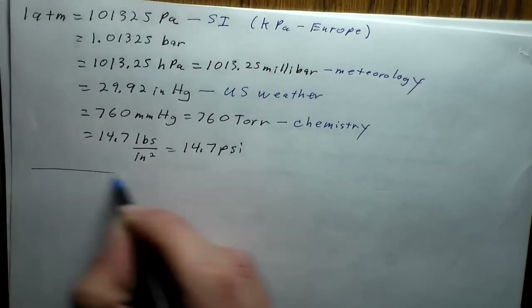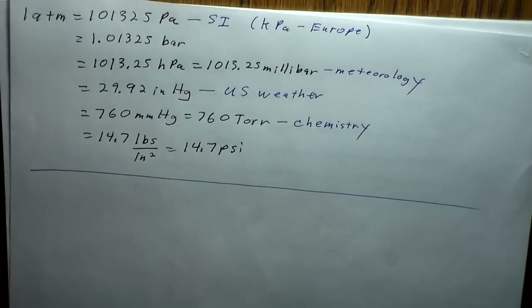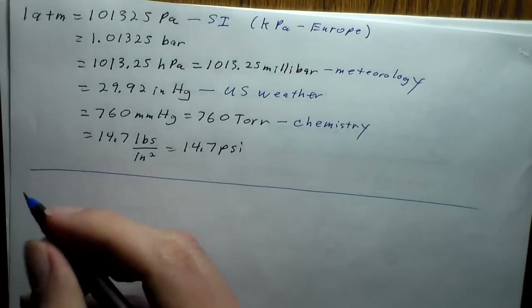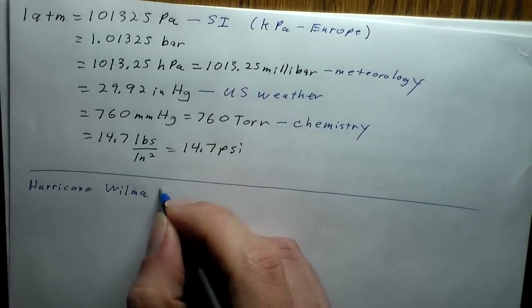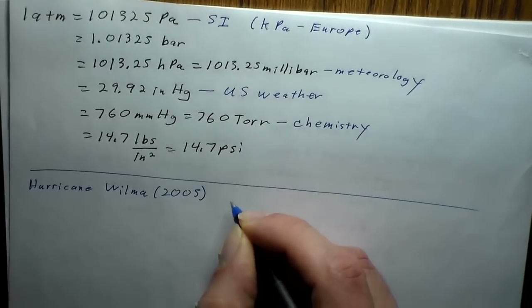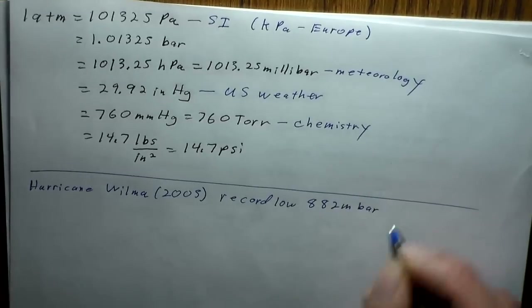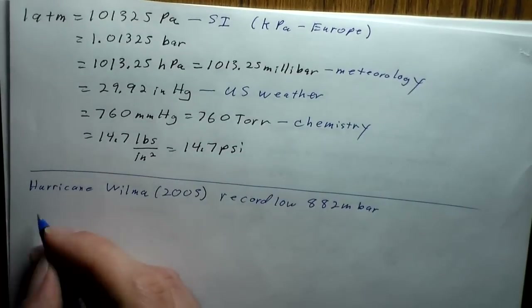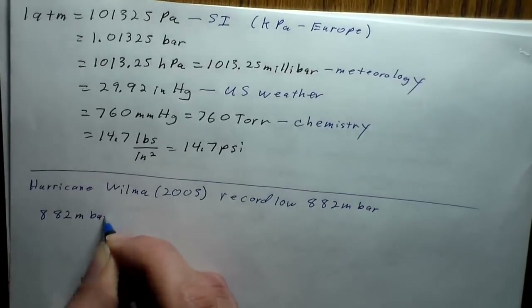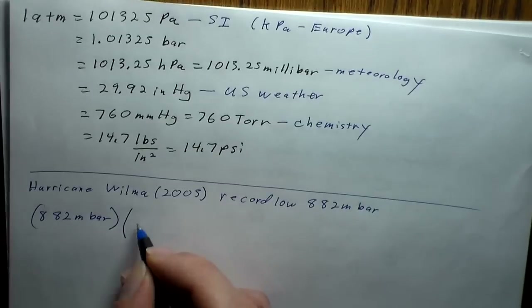Using these conversions is straightforward. In 2005 — the same year as Hurricane Katrina — Hurricane Wilma had the record low pressure in the Atlantic basin at 882 millibars. Let's convert that to other pressure units. First, convert 882 millibars to bars: 882 millibar × (1 bar / 1000 millibar) = 0.882 bar.